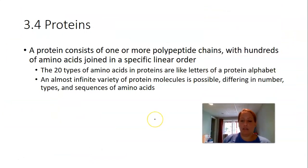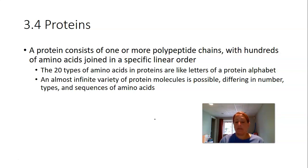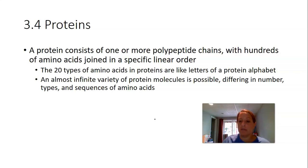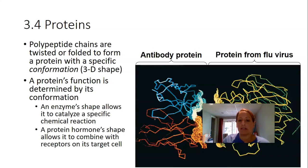A protein consists of one or more polypeptide chains, with hundreds of amino acids joined in a very specific linear order. The order of those amino acids is dictated by your DNA — your blueprint for proteins. The sequence of DNA codes for the sequence of amino acids, which dictates how the protein folds and therefore how it functions. With 20 amino acids arranged like letters in an alphabet, you can get an almost infinite variety of protein molecules.